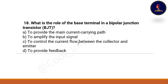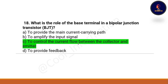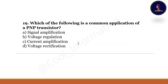Next question: What is the role of the base terminal in a bipolar junction transistor? Option A: to provide the main current carrying path. Option B: to amplify the input signal. Option C: to control the current flow between the collector and emitter. Option D: to provide feedback. The correct option is to control the current flow between the collector and emitter.